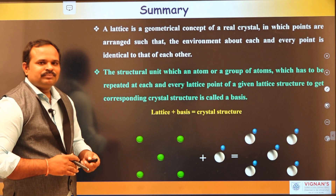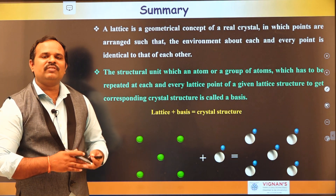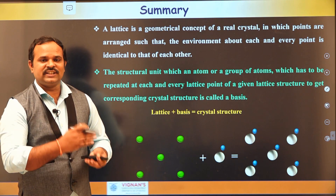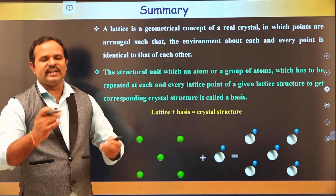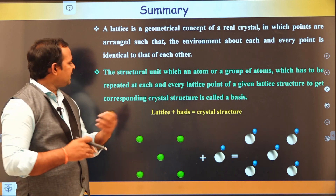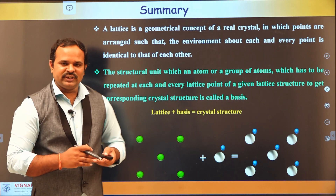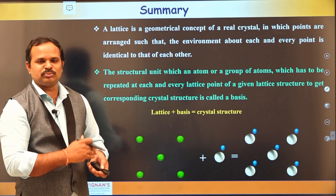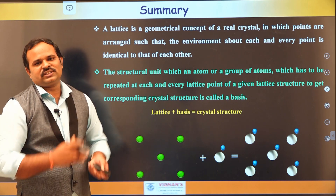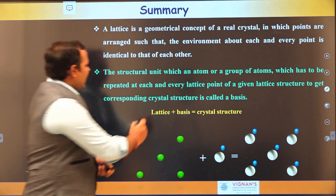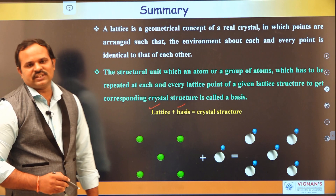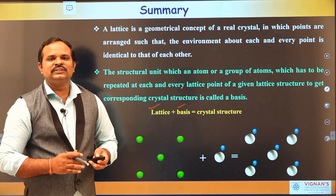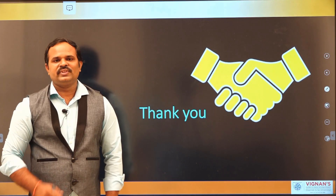In summary, a lattice is a geometrical concept of a real crystal in which points are arranged in space such that the environment about each and every point is identical. A basis is a structural unit of atoms or a group of atoms that has to be replaced at each and every lattice point to get a total crystal structure. Lattice plus basis gives the total crystal structure, and in this way we can visualize any crystal in the universe. Thank you.